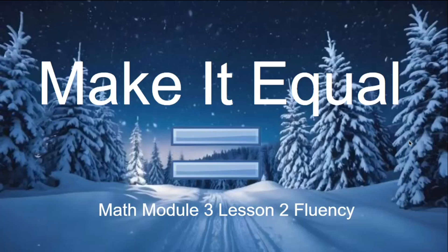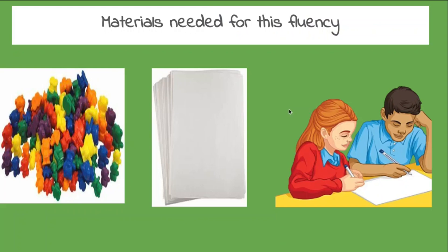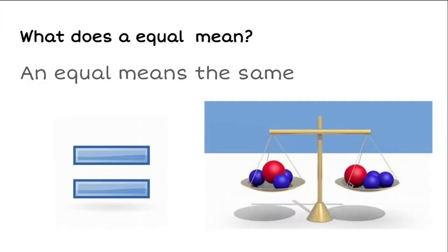Today we're going to do a fluency called Make It Equal. For this fluency you're going to need something to count with, a piece of paper, and a counting partner. Equal means the same on both sides. Equal.